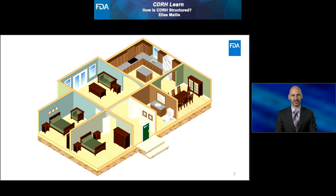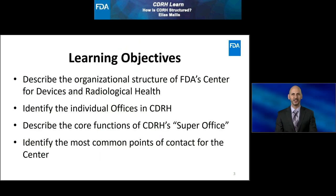When you think of an organization, you could describe it as a house. A house typically has a front door that lets you inside and windows that allow you to see. A house has different rooms that serve different functions, and sometimes those rooms are merged together to form a larger multi-purpose room. A house will hopefully have a roof that covers it and have utilities such as water and electricity for those inside the house. As we take our tour of the structure of the Center for Devices and Radiological Health, or CDRH, see if you can identify any parallels between the functions of the center and parts of our house.